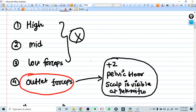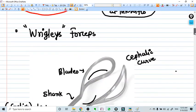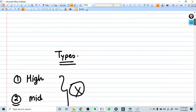Outlet forceps are the only forceps that use nowadays, and that also in a very specific condition. For example, the head station should be more than plus two, the head must be reached at pelvic floor, and the scalp is visible at the introitus without separating the labia. Only this condition is now applicable for forceps application. It's almost outdated now but still we need to learn and sometimes it is really useful.